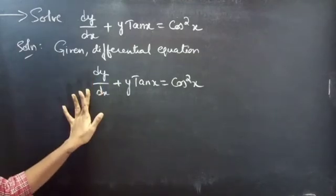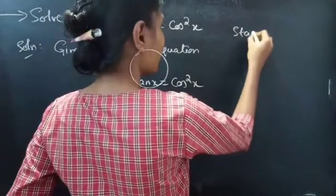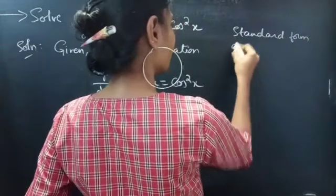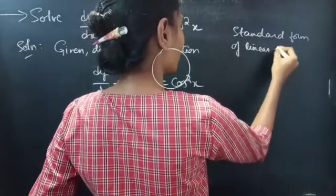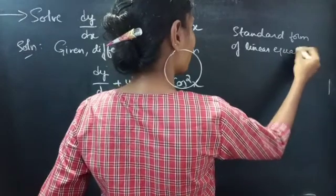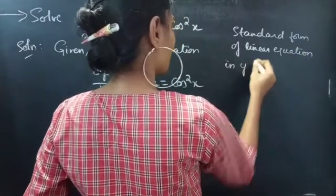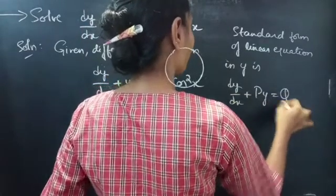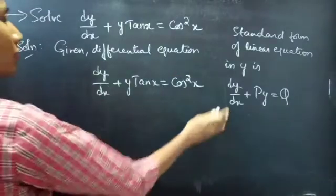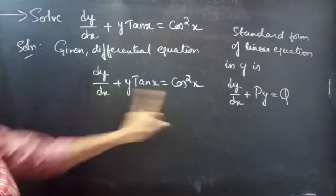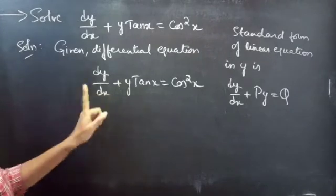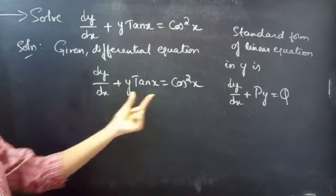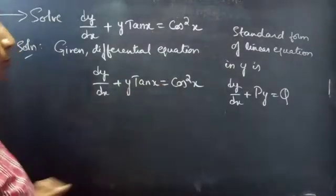The coefficient of dy/dx is 1. We know that the standard form of linear equation in y is dy/dx plus P into y equals to Q. The coefficient of dy/dx is 1, so by comparing these two, we can say that the given equation is in standard form: dy/dx plus P into y equals to Q.